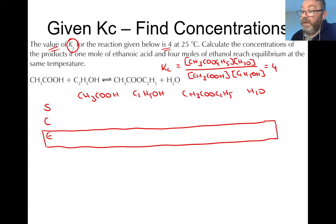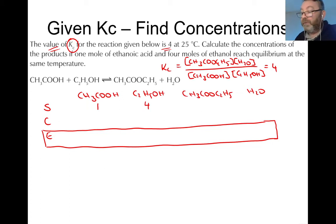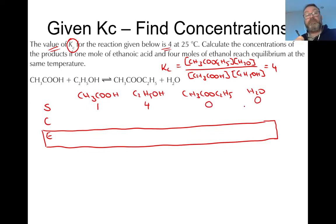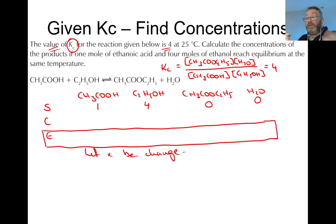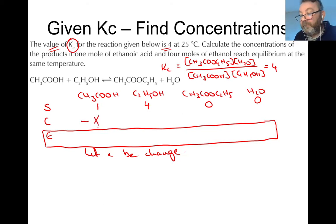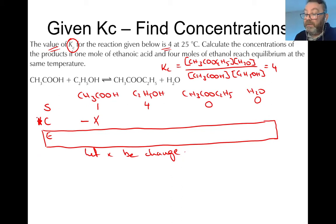The question says: calculate the concentrations of the products if one mole of ethanoic acid and four moles of ethanol reach equilibrium at the same temperature. So at the start: one mole of acid, four moles of alcohol, no products. There's no mention of equilibrium concentrations or any change, so here's where we introduce X. Always let X be the change. One mole of acid is going to decrease by something — let it decrease by X. Then distribute X to all reactants and products according to the ratio in the balanced equation.